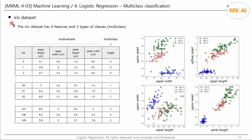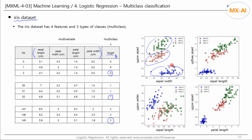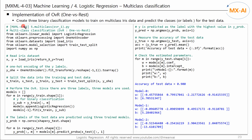Now let's implement the OVR multi-class classification using the IRIS data set. This data has four features X and one target Y. There are three types of target Y: 0, 1, and 2. The data consists of three clusters. We'll create three binary classification models that train the IRIS data, predict the classes of the test data, and use the logistic regression library as a base model.